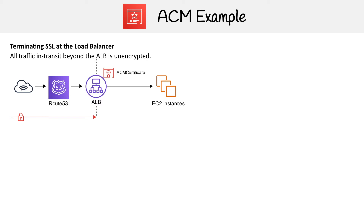That red line represents traffic that is encrypted. Once it hits the ALB, the certificate is going to decrypt that traffic, and then everything between the ALB and the EC2 instance is now unencrypted. That's totally fine, because it's within your network, so it's still secure.